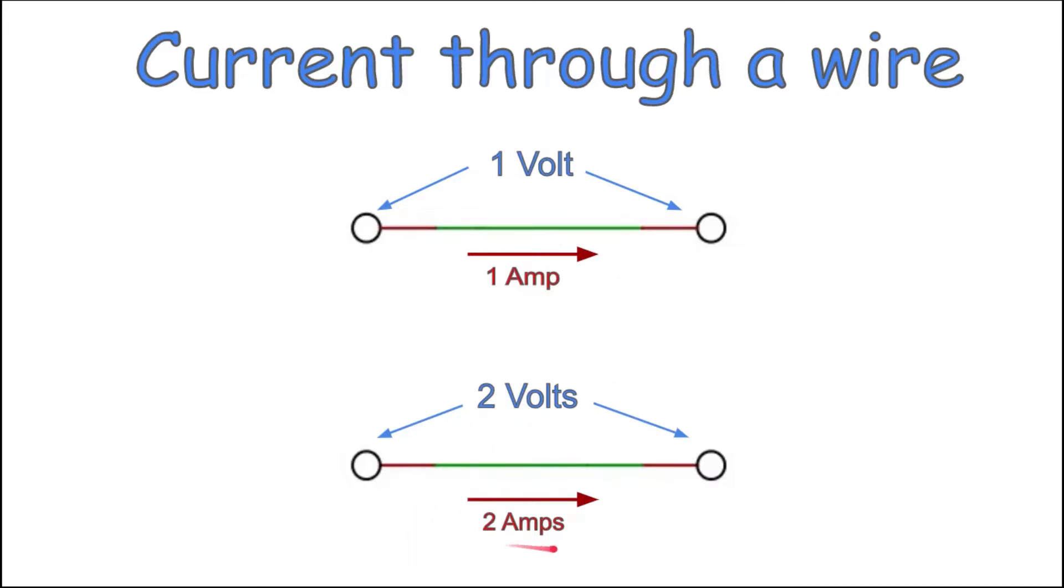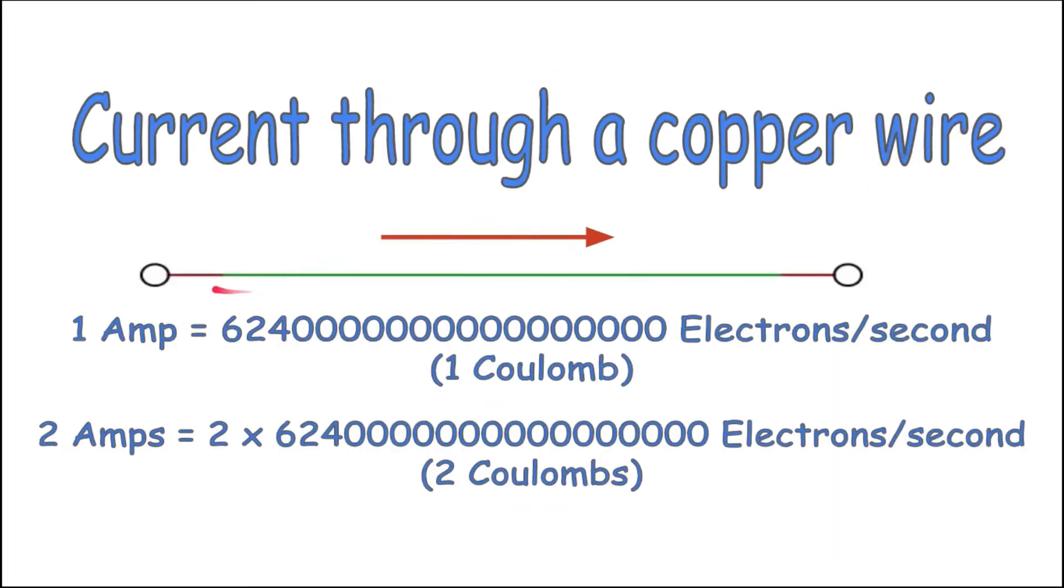When one amp of current flows through a copper wire, it means that this many electrons are being pushed through a cross section of that wire every second. That's a lot of electrons. That amount of electrons is referred to as one coulomb. If two amps of current are flowing through that same wire, then two times that many electrons are being pushed through a cross section of that wire each second, or two coulombs.